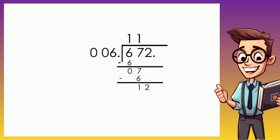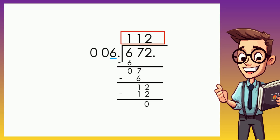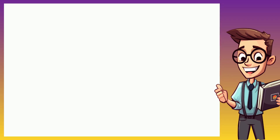Next we bring down the last digit, which is 2, so this becomes 12. We need a number that when multiplied by 6 equals 12 or something closer to 12 — that number is 2, because 2 times 6 is 12. Subtracting 12 from 12 results in 0, so the final answer is 112.